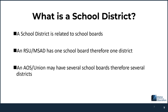What is a school district? A school district relates to the number of school boards within that entity. For instance, an RSU has one school board, therefore is one district. Most RSUs are made up of more than one town. An AOS or union will have several school boards and therefore several districts within it. Each school within an AOS or union is a district unto itself, unless — for instance, Deer Isle Elementary and Deer Isle High School are two schools but there's one district within that AOS.